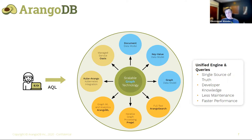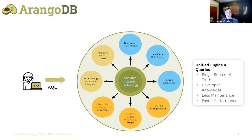We also have a built-in full-text search engine called ArangoSearch, which allows for full-text federated information retrieval and comes with advanced features like similarity and ranking for your text data. We support iterative graph processing with Pregel, with a number of built-in algorithms as well as a new experimental feature for custom Pregel algorithms. And as we'll see in this talk, we have GraphML and Analytics in our ArangoML suite of tools.